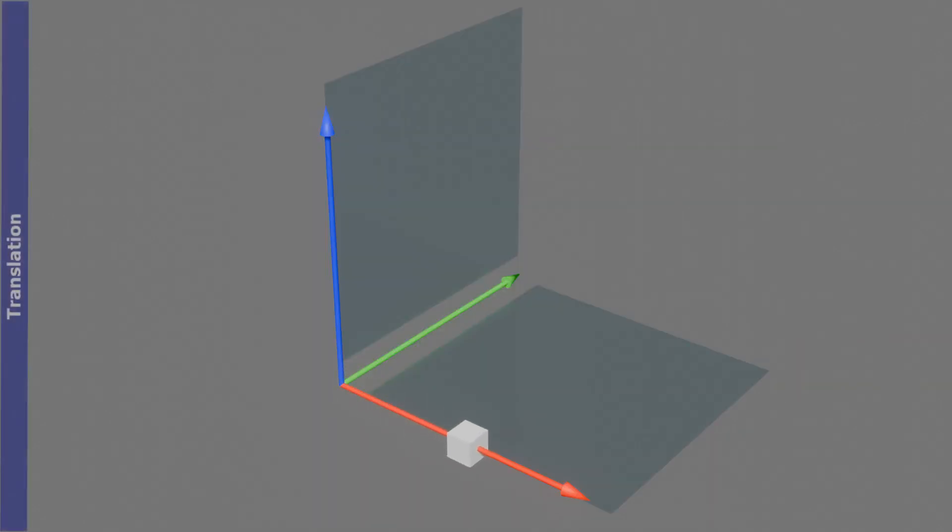Now, let's explore translation. Translation involves moving an object from one location to another without changing its size. The object can move separately in the x-axis, y-axis, and z-axis.